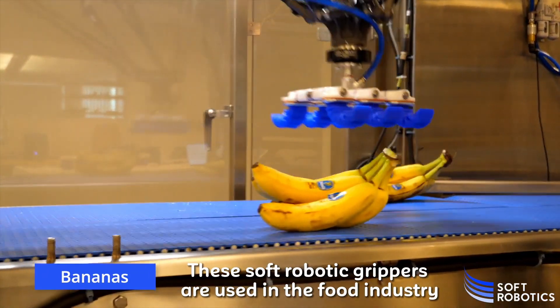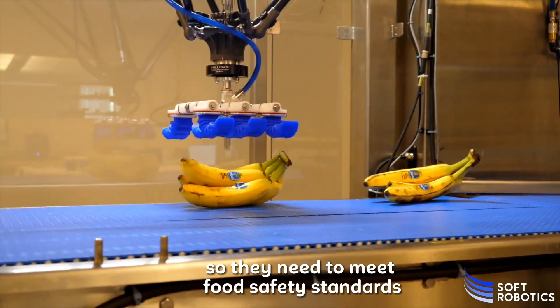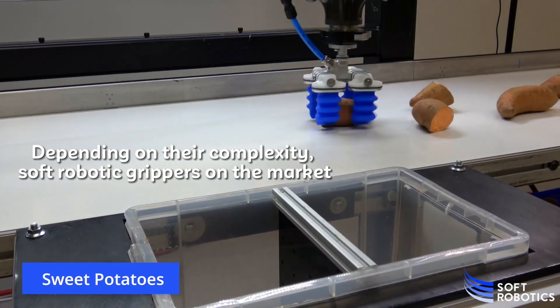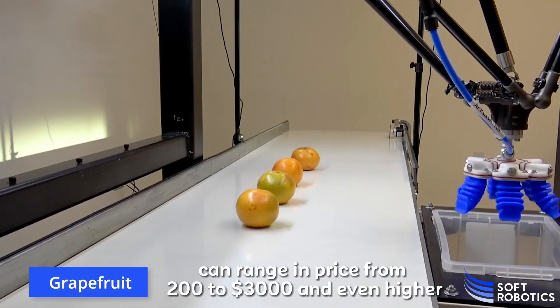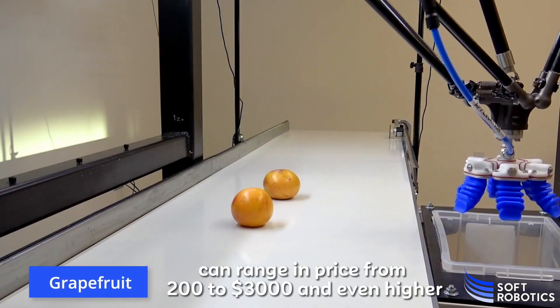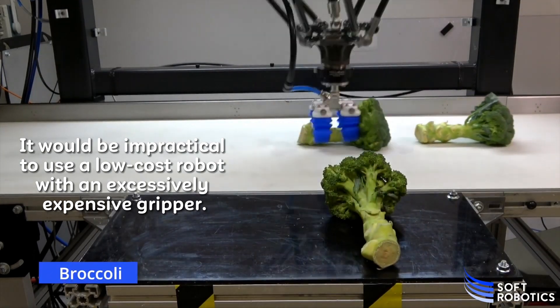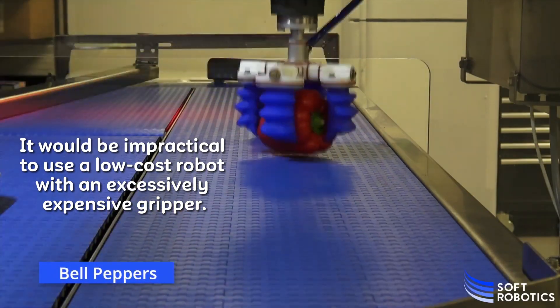These soft robotic grippers are used in the food industry, so they need to meet food safety standards. Depending on their complexity, soft robotic grippers on the market can range in price from $200 to $3,000 and even higher. Here, it would be impractical to use a low-cost robot with an excessively expensive gripper.